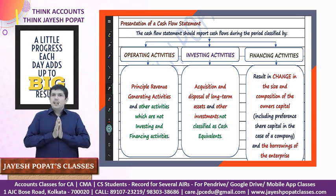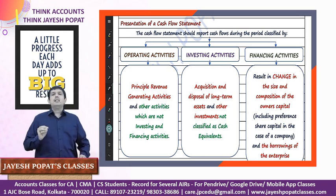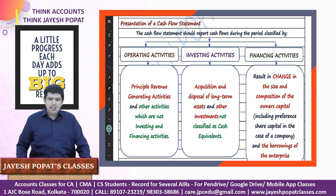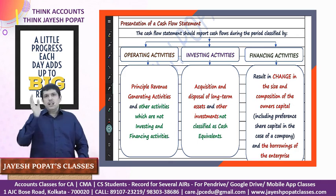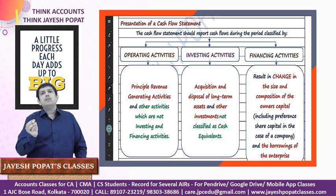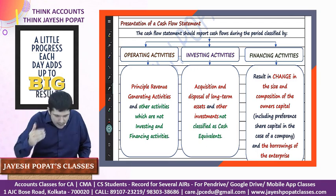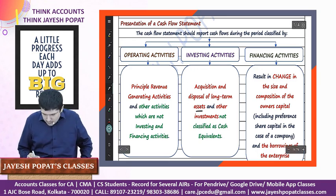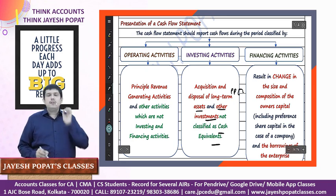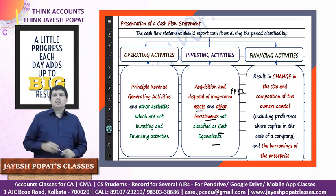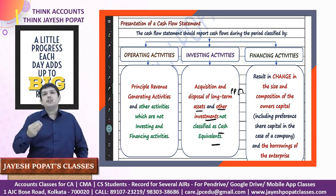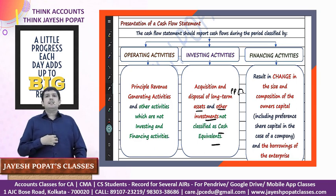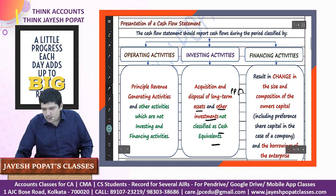Investing activity deals with acquisition and disposal of investments which are not classified as cash equivalents, and long-term assets. Cash equivalents are investments of maturity up to 3 months meeting the definition; all other investments are covered under investing activity. So acquisition and disposal of long-term assets such as PPE, and other investments not classified as cash equivalents - including purchase and sale of fixed assets, purchase and sale of investments, and returns from investments like interest and dividends received - fall under this category.